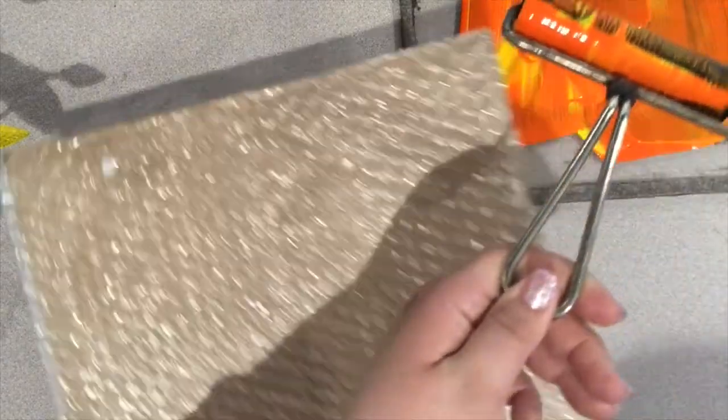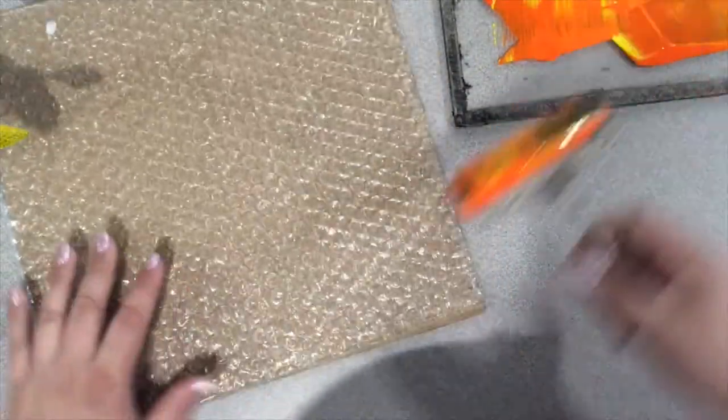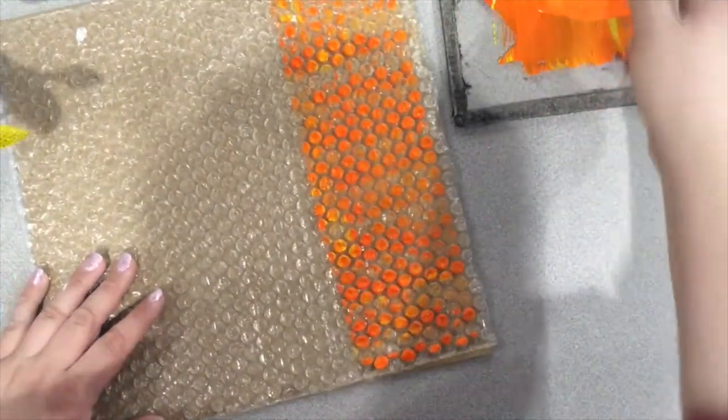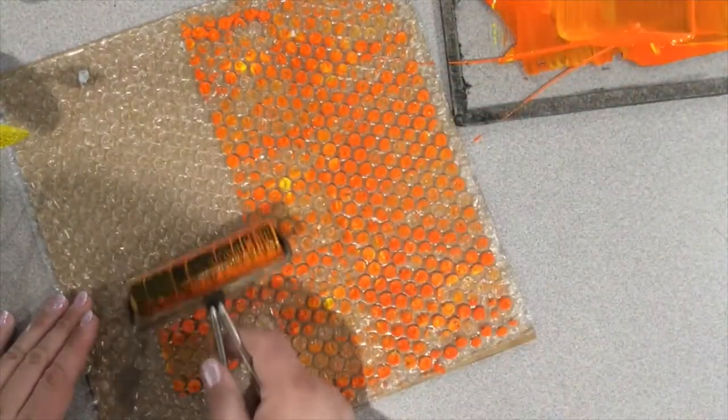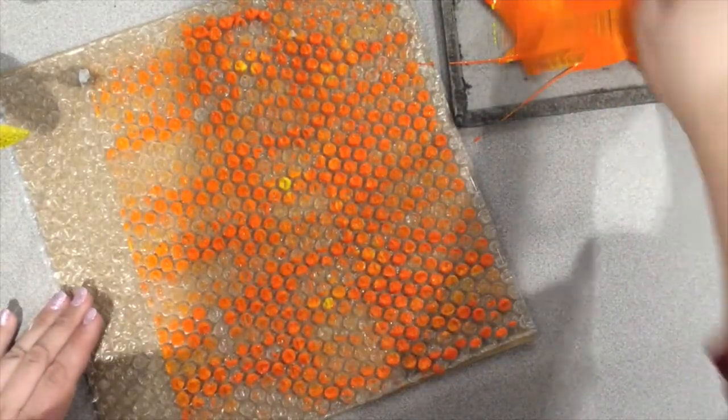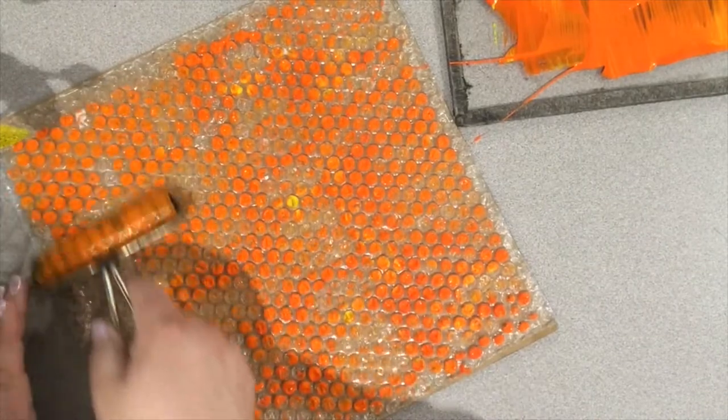Next, you're going to be putting the paint onto your printing plate. For this printing plate, we have bubble wrap that I've taped to a piece of cardboard. Just roll your paint onto the bubble wrap. Be careful not to press too hard because we don't want to pop all of the bubbles. That would defeat our purpose. We're trying to create a nice even layer of paint so that we can have an even print when we're all done.